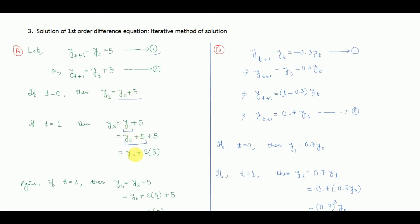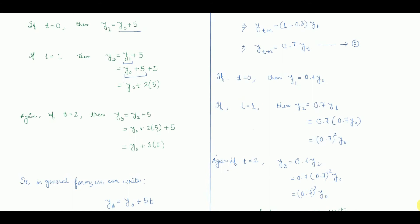Since there are two 5's, we write y0 plus 2×5. Again, if we put t equal to 2, equation number 2 becomes y3 equals y2 plus 5. Since y2 equals y0 plus 2×5, we get y3 equals y0 plus 3×5. So in general form, yt equals y0 plus 5t. This is the solution of the first order difference equation by the iterative method.